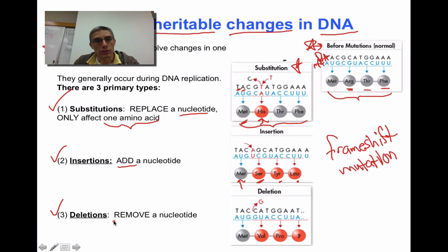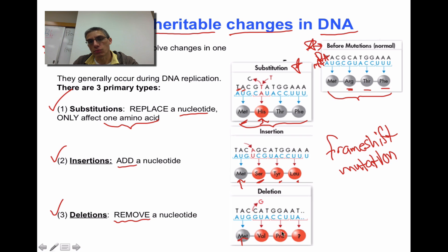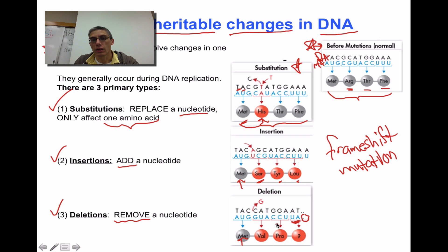Deletion is the same concept — instead of replacing something, we actually pull one of those nucleotides or nitrogen bases out. In this case, we're pulling the G out, which shifts everything over to the left. We still start with methionine, but now we have two different amino acids being coded for: valine and proline, whereas before we had arginine and threonine. We end up with two lone nucleotides on the far right with no third nucleotide, and without a third nucleotide you can't code for an amino acid, so this definitely does a lot of damage to that sequence and produces a very different protein from the original.